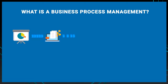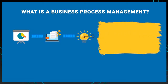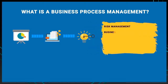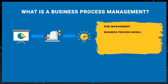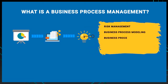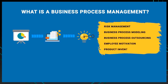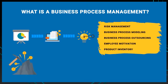The key components involved in business process management are risk management, business process modeling, business process outsourcing, employee motivation, and product inventory. The main advantage of business process management is that it can be remolded as well as modified again according to the needs of the changing business environment.